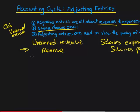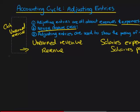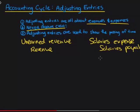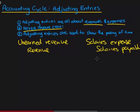Adjusting entries are all about either revenue or expense adjusting entries — never write down cash. The third rule is that adjusting entries are used to show the passage of time. That's a little ambiguous, but I'll clear that up through an example about a payroll for the month of August.